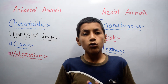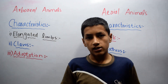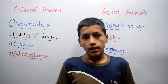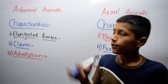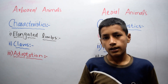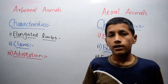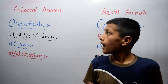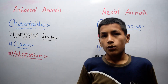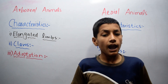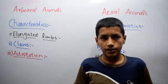There are thousands of species of arboreal animals. Let's come to the characteristics of arboreal animals. The first characteristic is elongated limbs. Arboreal animals have elongated limbs which help them in jumping from one branch to another branch.